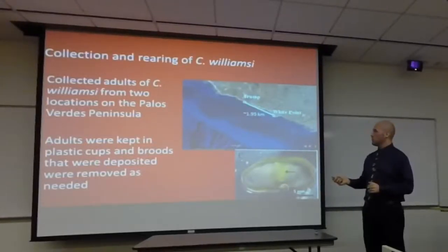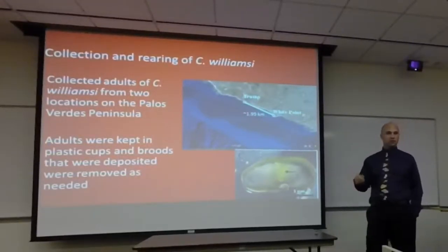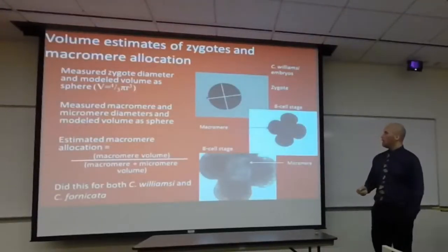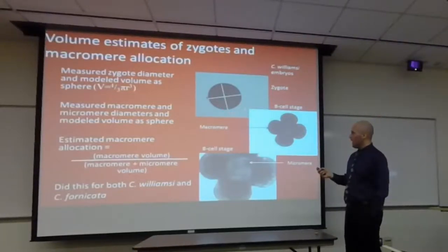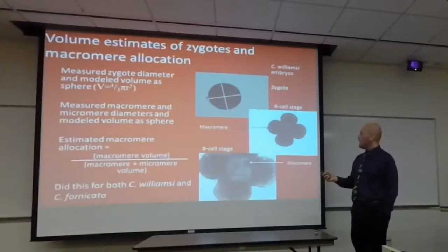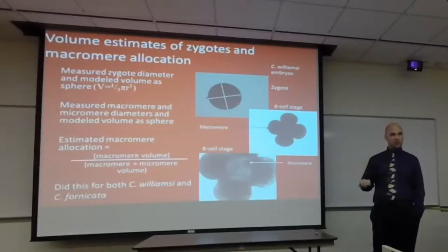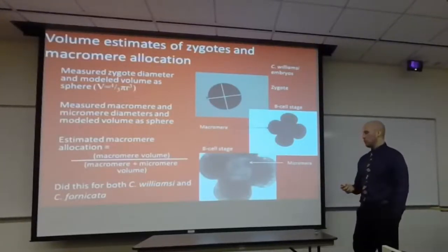I collected adult Crepidula williamsae from two locations on the Palos Verdes Peninsula — White Point and Trump — kept them in cups, and removed broods as needed. To estimate zygote volume, I isolated embryos, measured two diameters, and modeled volume as a sphere. I followed individual embryos to the eight-cell stage, measured macromere diameters, modeled volume as a sphere, and estimated macromere allocation as macromere volume divided by total eight-cell stage volume. I did this for both Crepidula williamsae and Crepidula fornicata.